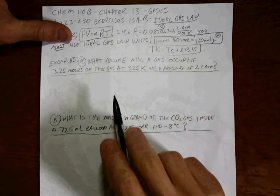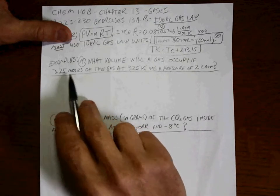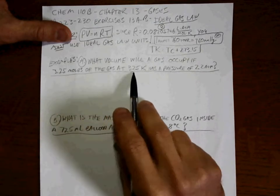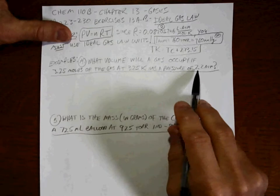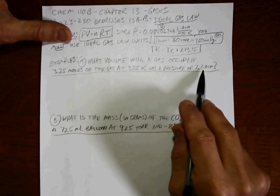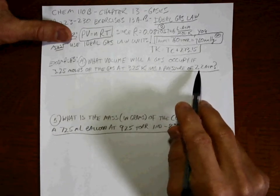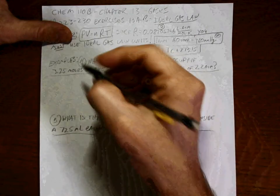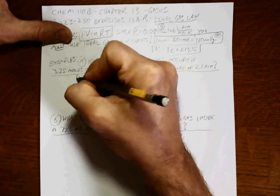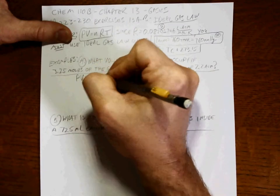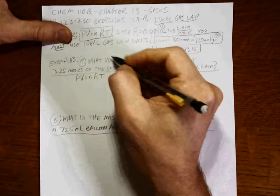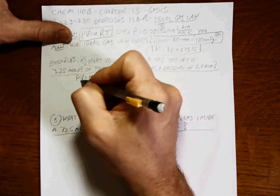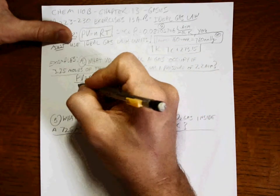So what volume will a gas occupy if 3.25 moles of it at 325 K has a pressure of 2.2 atmospheres? All right. It's an Ideal Gas Law problem. We're solving for volume, so do the algebra first.